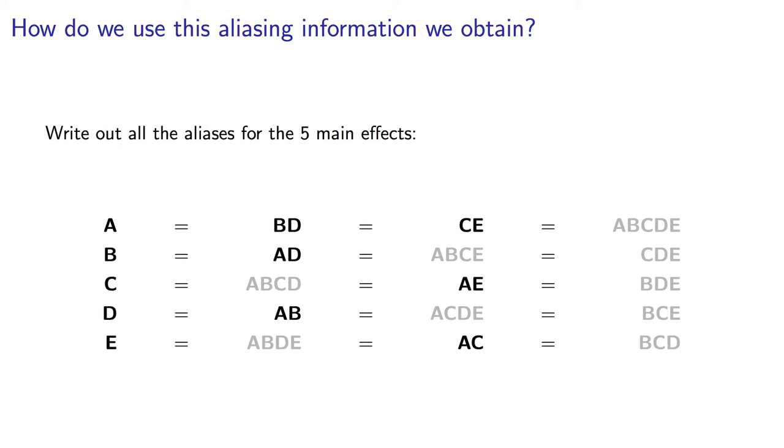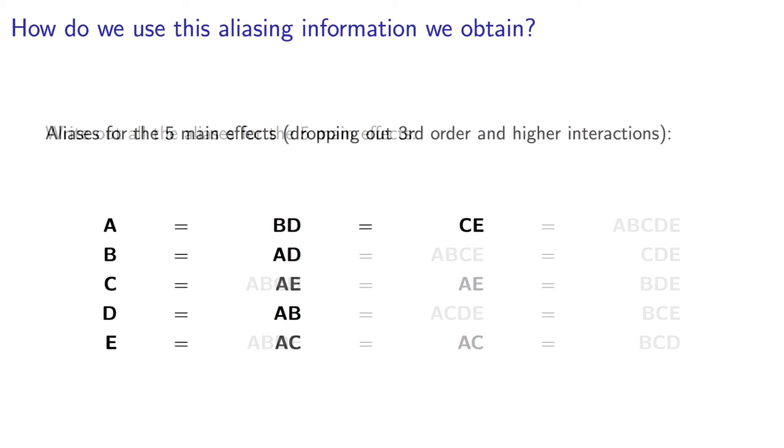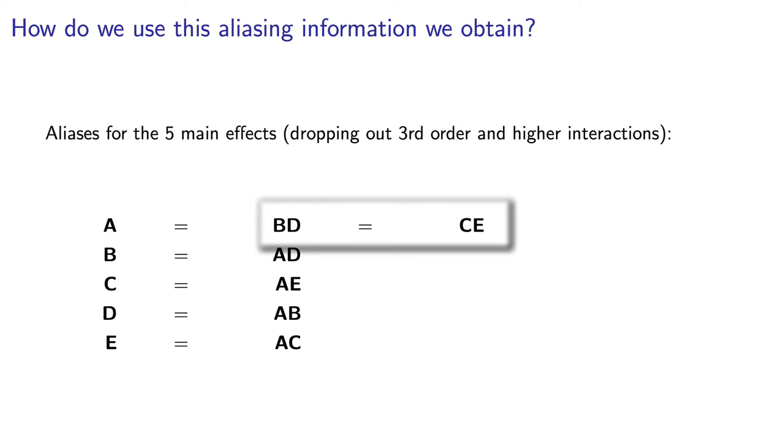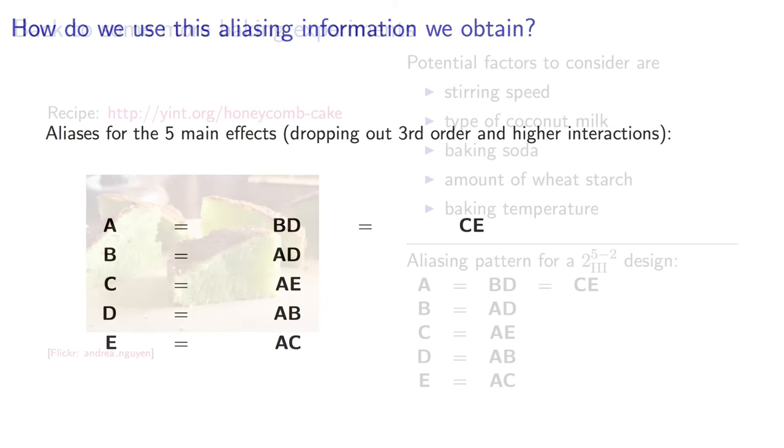The implication is clearer when I write out the aliasing, only showing those aliases up to the second-order level, so ignoring third-factor and higher interactions. So what I learn here is that I would plan my experiment ahead of time to assign to factor A, a factor that I'm not too concerned about estimating clearly. That's because factor A is confounded with two second-order interactions.